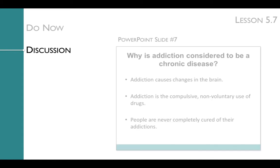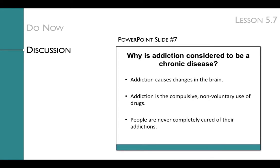The discussion then transitions into the explanation of why addiction is considered to be a chronic disease. This argument focuses on three central points: that addiction causes changes in the brain, that addiction is the compulsive non-voluntary use of drugs, and that people are never completely cured of their addictions.